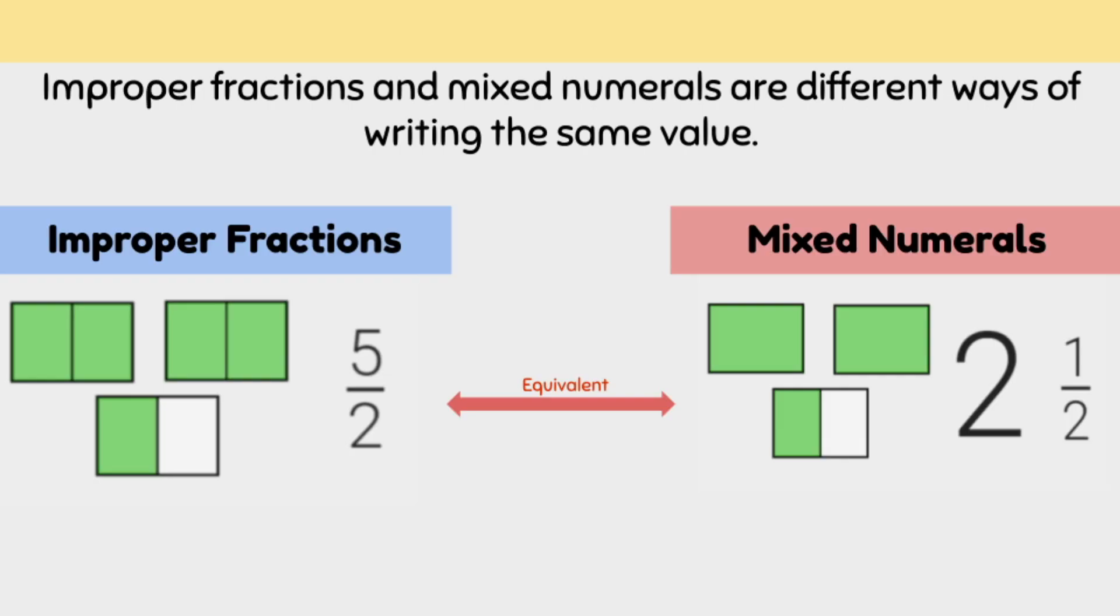An improper fraction and a mixed numeral are just different ways of writing the same value. While an improper fraction focuses on the total number of parts we have, a mixed numeral looks at how many whole values we have and then how many parts are left over.